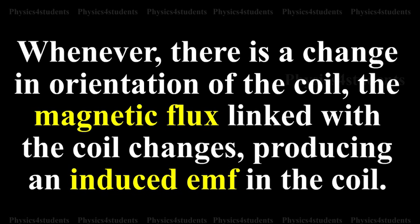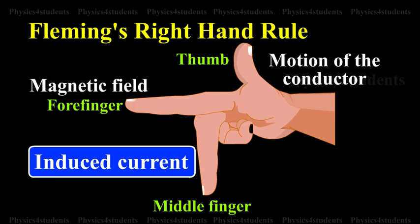Working: Whenever there is a change in orientation of the coil, the magnetic flux linked with the coil changes, producing an induced EMF in the coil. The direction of the induced current is given by Fleming's right-hand rule.